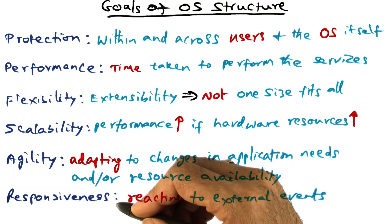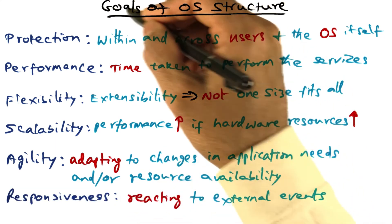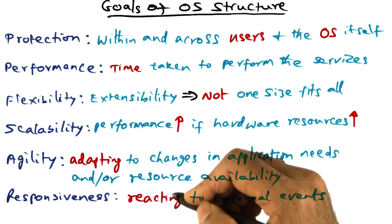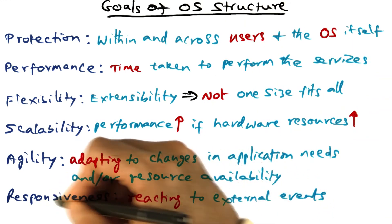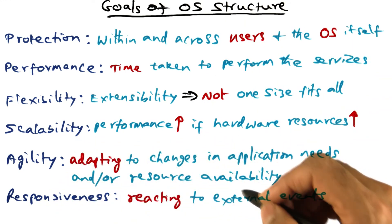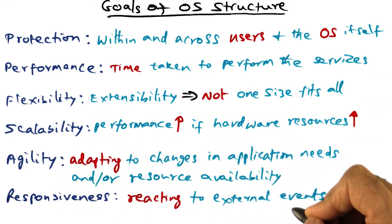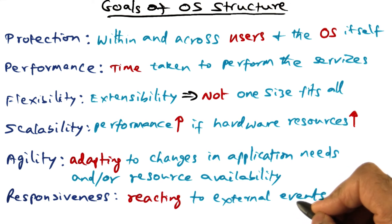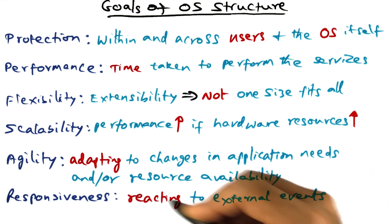Another worthwhile goal of operating system structure would be responsiveness — that is, how quickly the operating system reacts to external events.